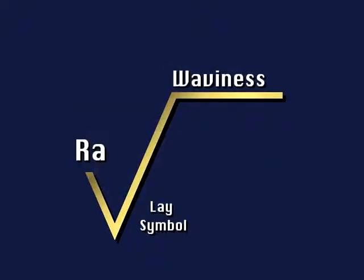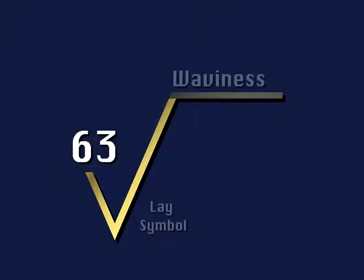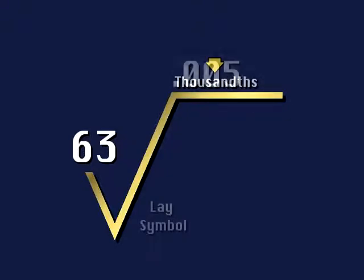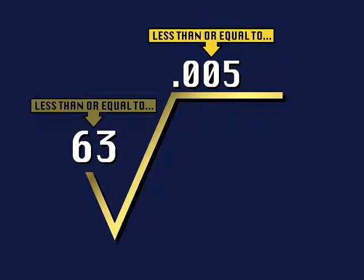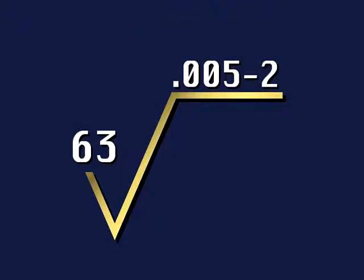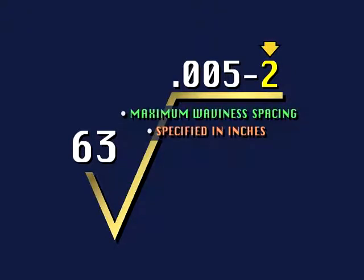Not all of these components are used on every print. On many prints, average roughness will be the only measurement noted for the required surface finish. The average roughness value is typically stated in microinches — for example, 63 means 63 microinches. The waviness value is stated in thousandths of an inch; here you see a waviness value of .005, which means five thousandths of an inch. Any average roughness value less than or equal to 63 microinches is acceptable, and any waviness value less than or equal to five thousandths is also acceptable. Sometimes the waviness value is followed by a hyphen and another number — this is the maximum waviness spacing rating, specified in inches.